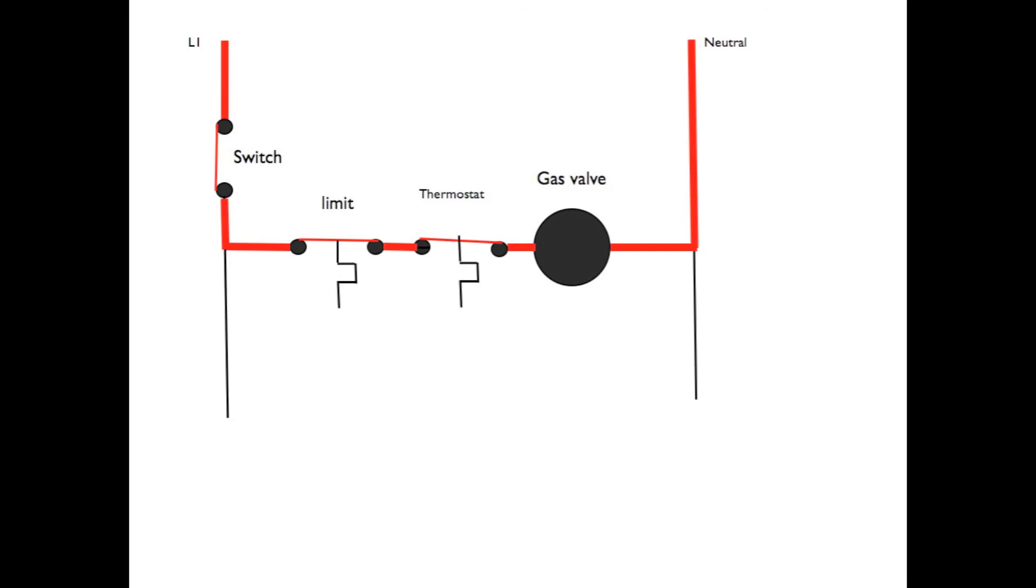In this system, we've got a couple of different types of switches. We've got two switches that are actuated by temperature, and one switch is manually actuated. The system switch would be considered normally open, because all wiring diagrams are drawn with no power to the unit and nothing running. The limit switch would be closed because it's normally closed. The thermostat would be open because it's an operating control.